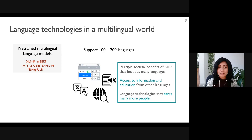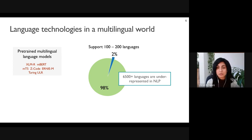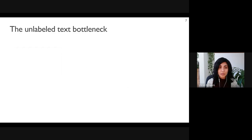Today I'm going to be talking about something different. While current multilingual models support far more languages than those from a few years prior, they still only include around two percent of the over seven thousand living languages in the world. Most of the remaining languages are underrepresented in state-of-the-art NLP research and development, and the over 2.2 billion people who natively speak these languages are underserved by modern language technologies.